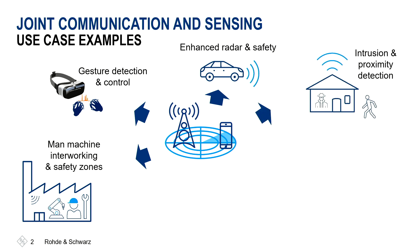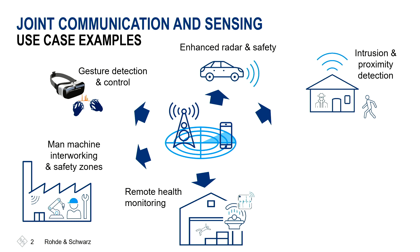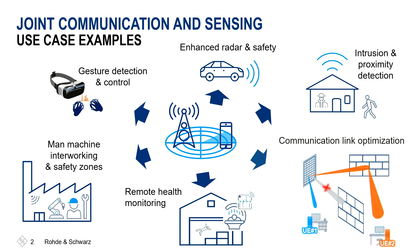At home, intrusion and proximity detection might be a good use case. For eHealth even, we have detection of falling people at home or heart rate monitoring from remote. And finally, we can also improve the communication link by using these sensing capabilities. So if we are able to see objects in the proximity, we can steer our beamforming for the data communication to improve it.